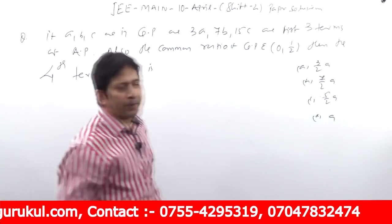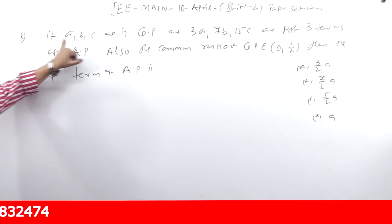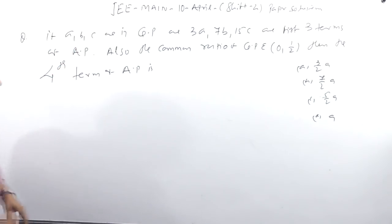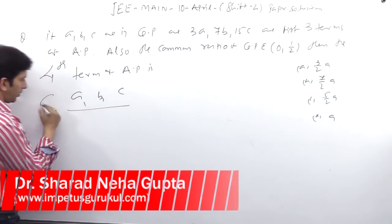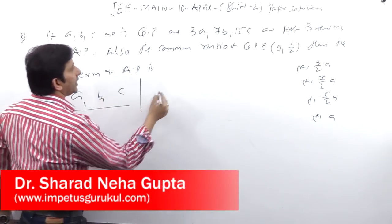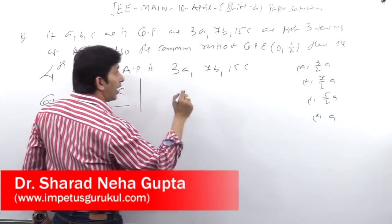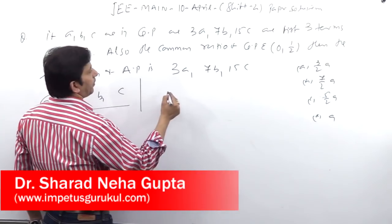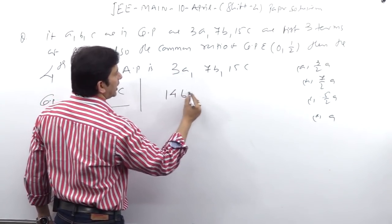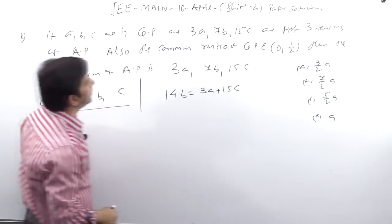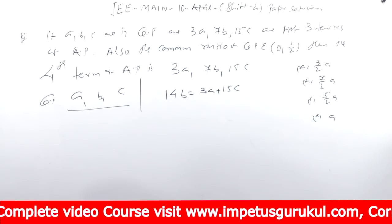Next question — it's an AP-GP question, a slightly confusing but simple question. If A, B, C are in GP, and 3A, 7B, 15C are the first three terms of an AP, then 14B (the middle term) = 3A + 15C. The common ratio R belongs to (0, 1/2). Find the fourth term of the AP.